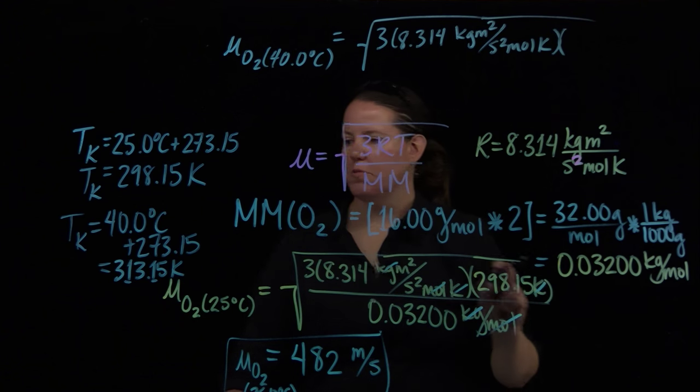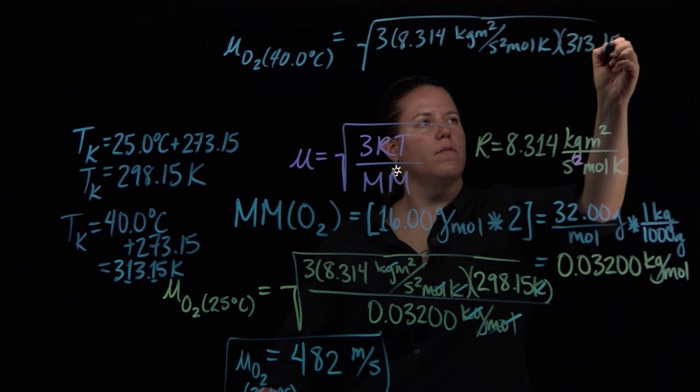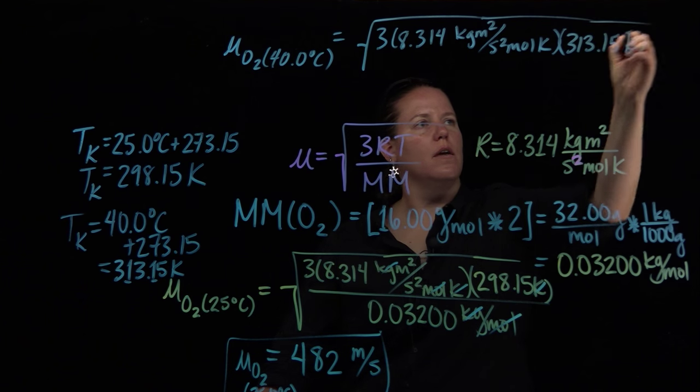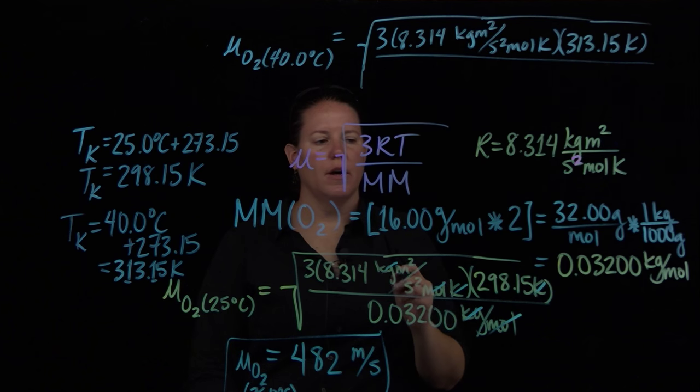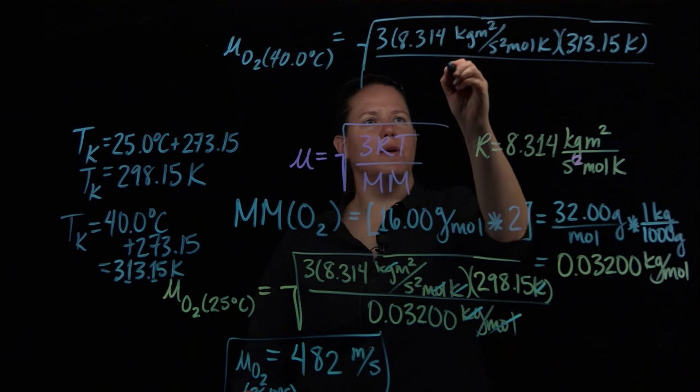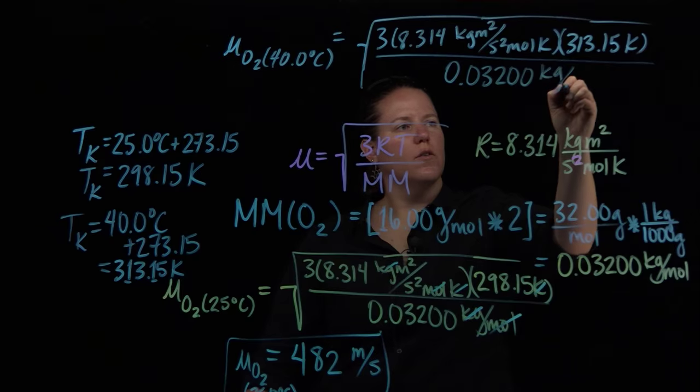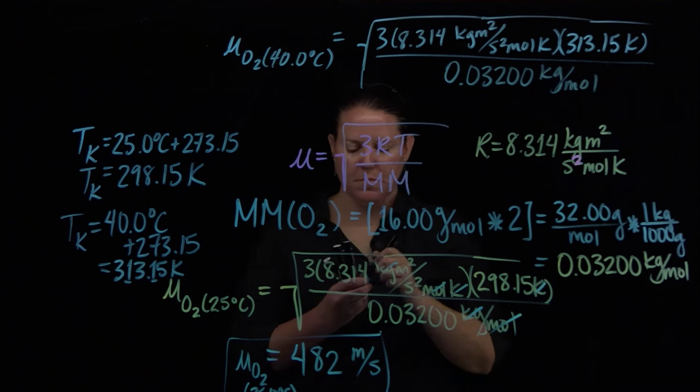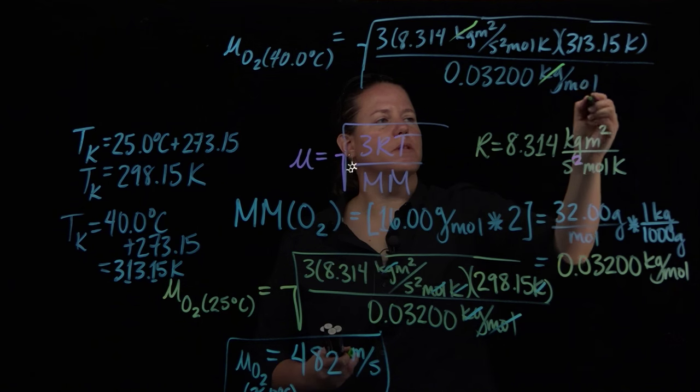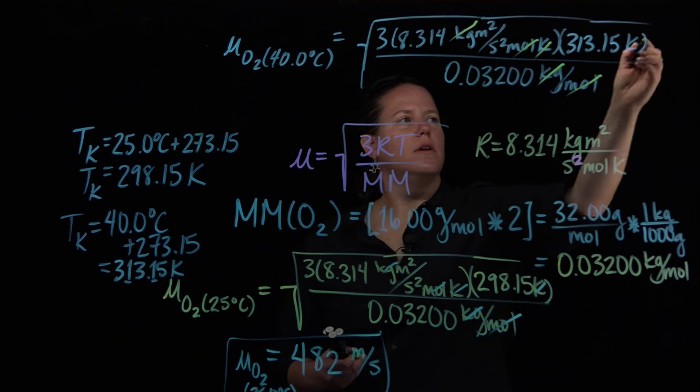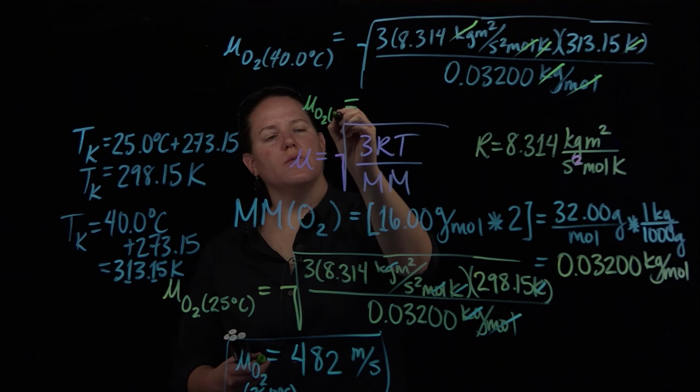Now I have a different temperature. My temperature is no longer 298 K, it's 313.15 K. Then I divide that by the same exact molar mass I used before in kilograms per mole. Kilograms cancel out, moles cancel out, K cancels out. I have meters squared per second squared.